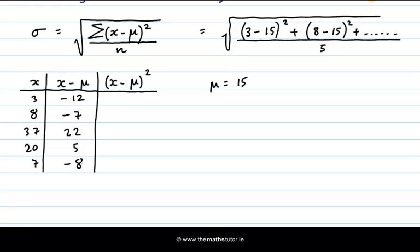Now we square each of those deviations. We get 144, we get 49. 22 when we square it, gives us, let's do it rough.